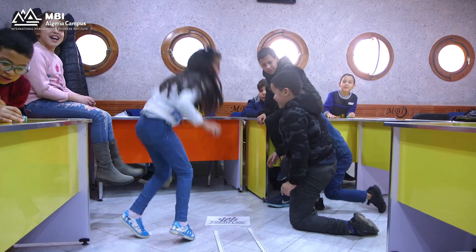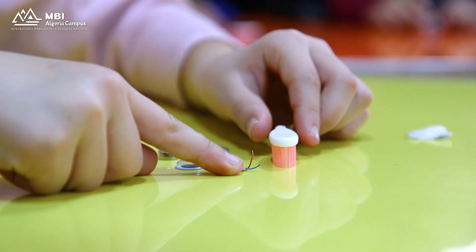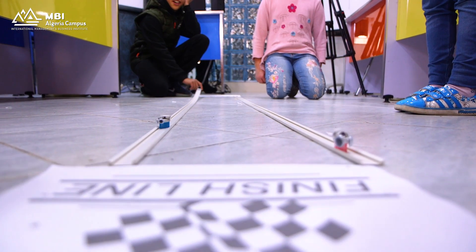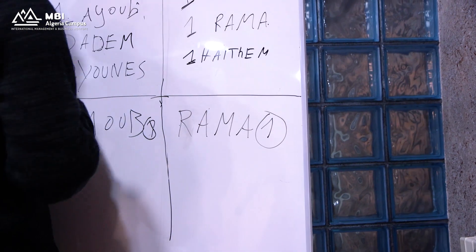Our exercise today is an introduction to robotics. We are helping kids understand what a robot is, what robots do, and the main parts of a robot. In this workshop, every kid had to make their own robot. Then we organized a race with team 1 and team 2, and found a winner.